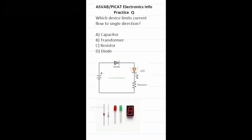Practice test question: which device limits current flow to a single direction? The most common function of a diode is to allow an electric current to pass in one direction — that's called the diode's forward direction. Here's what it looks like in a diagram, that's its symbol, and this is what a diode looks like in real life. So this one is D, diode.